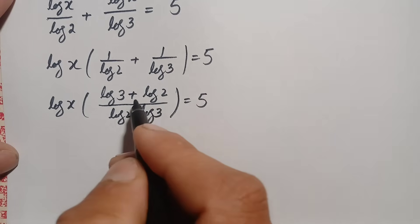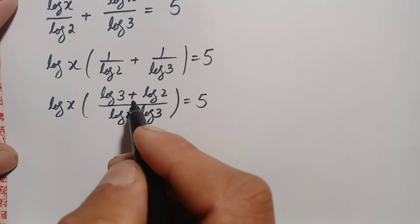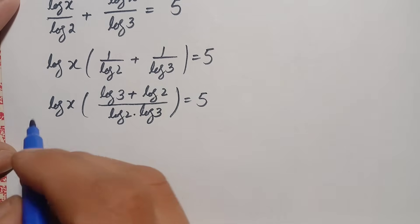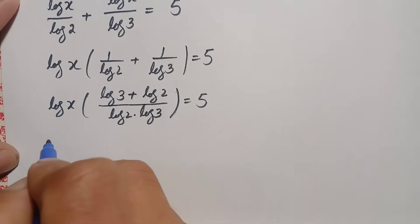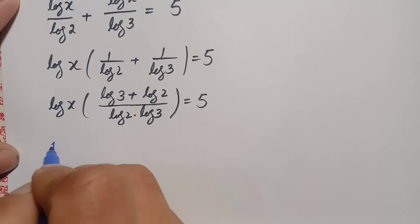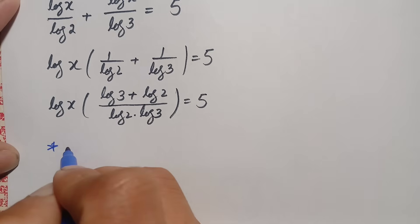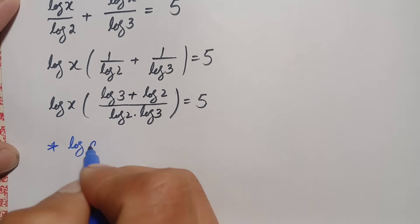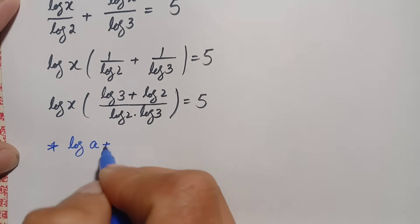Now in the numerator we will use another logarithm result. We can write log of 3 plus log of 2, which equals log of 6.